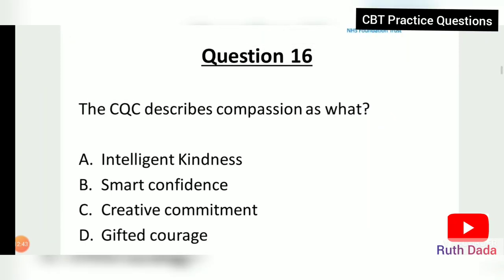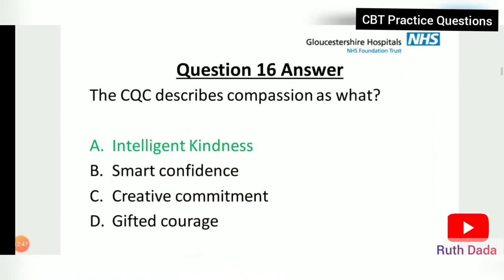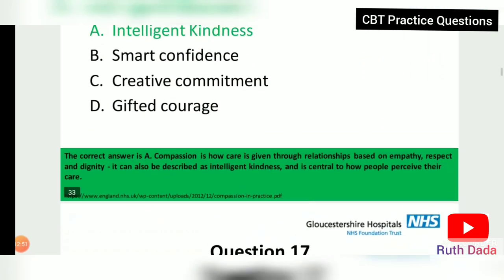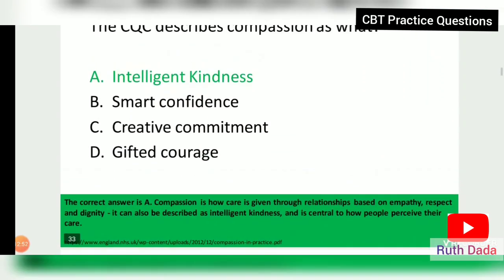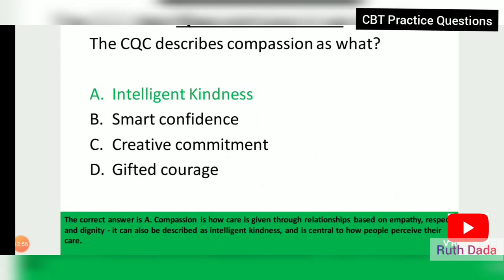Question 16: The CQC described compassion using what words? Compassion is how care is given through relationships based on empathy, respect, and dignity. It can also be described as intelligence and kindness, and is central to how people perceive their care.